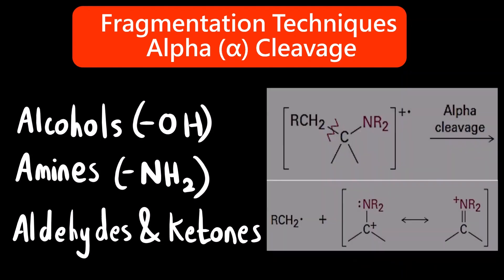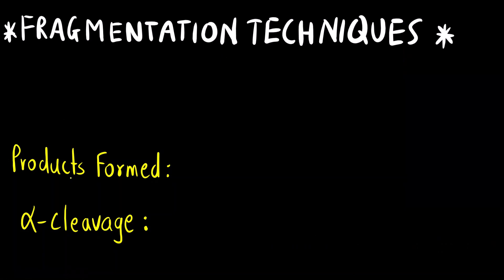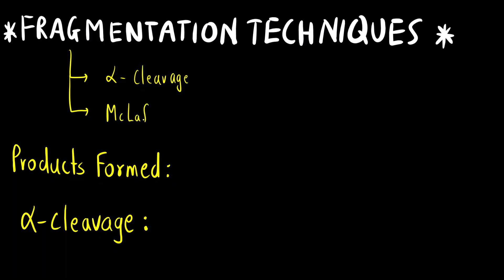This is a general reaction for alpha cleavage in amines. Fragmentation techniques are basically of two types: one is the alpha cleavage that we will see in this video with examples, and then in the next video we will see a rearrangement called McLafferty rearrangement. Both these fragmentation techniques are very important.